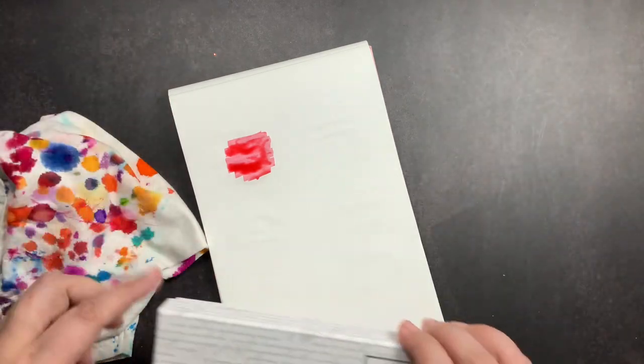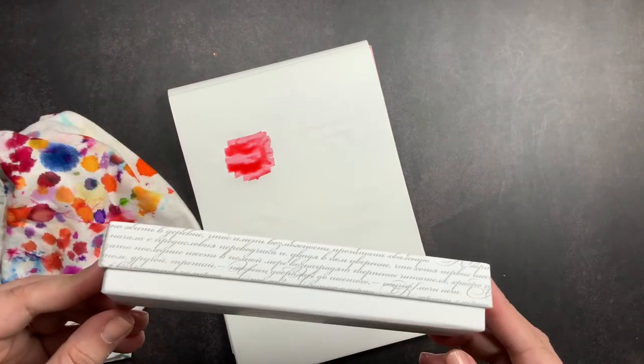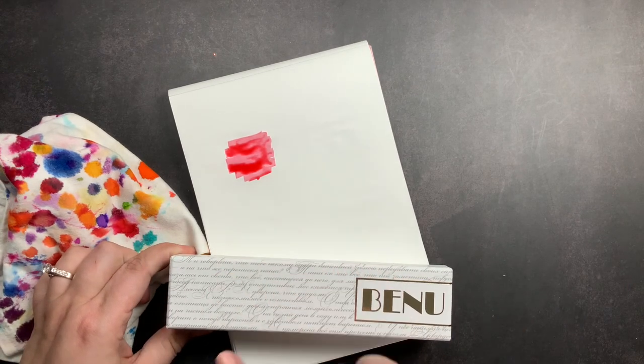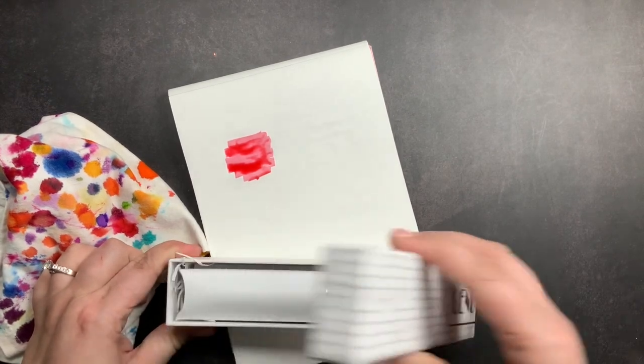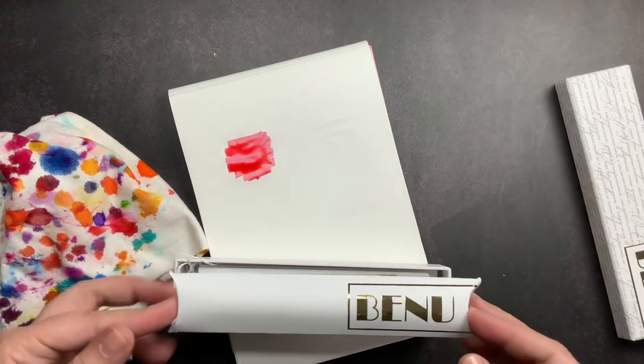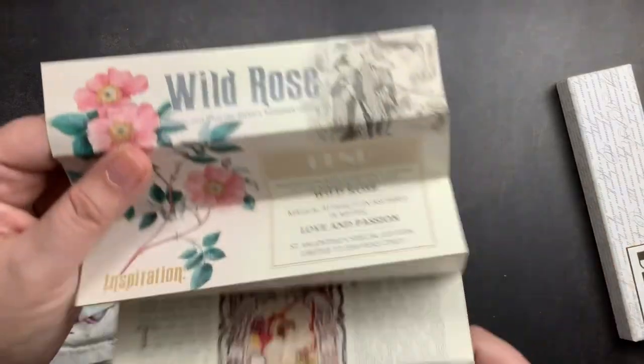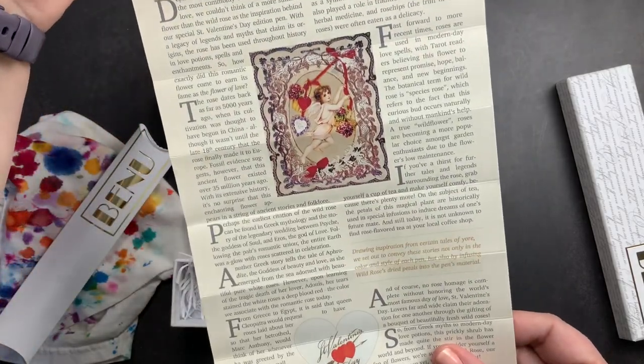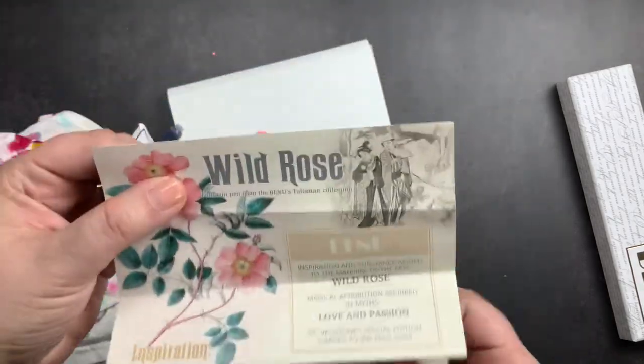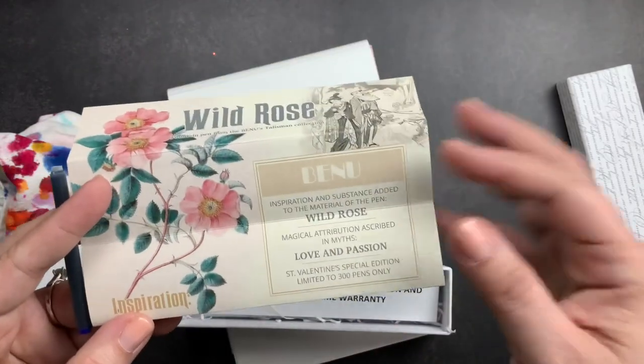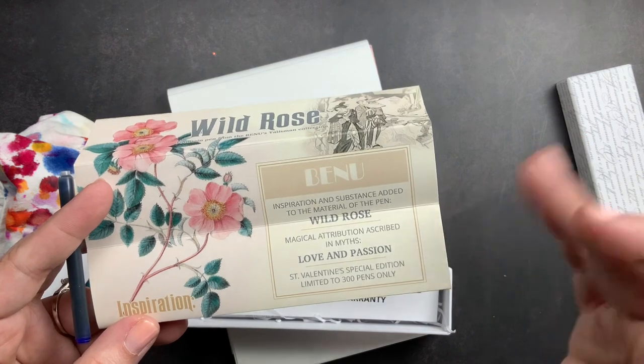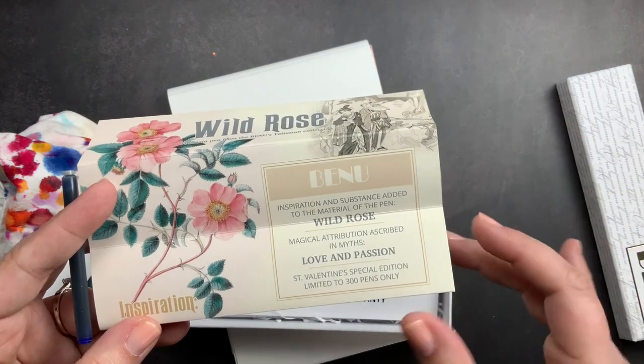And then while that's drying, we're going to check out my pen. So this is a Benu Talisman in Wild Rose. This was a limited edition pen that they launched in February. This is the little paper about it. It has a little write-up about the inspiration and then this talks a little bit about the pen itself—that it is the Wild Rose pen, that it is attributed to love and passion, that it was a Valentine's special edition and that they were limited to 300 pens only.